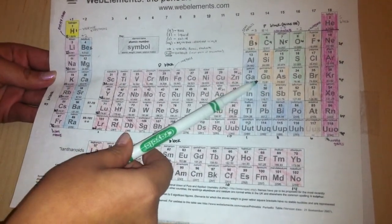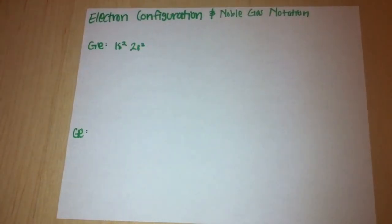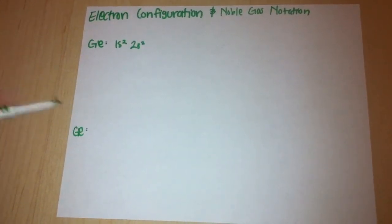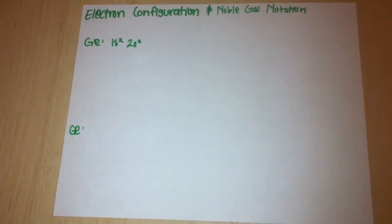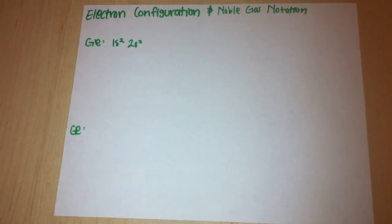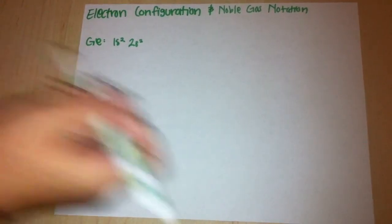So if we wanted to find number 32 germanium, it's very easy. You just read from left to right and write down the energy level, block name, and subscript. You can start off with 1s2 because we're on level 1 in the S block and there are two elements on this level. Next, you write 2s2 because we're on level 2 in the S block and there are two elements on this level.